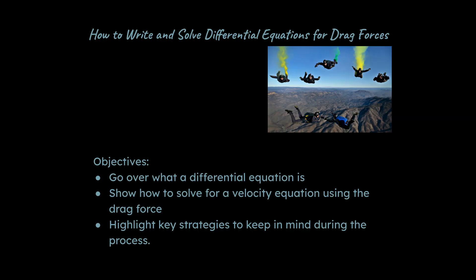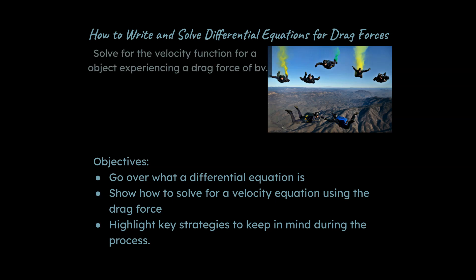A type of problem you would see on an FRQ for AP Physics C mechanics would be to solve for the velocity function for an object experiencing a drag force of BV, KV, negative BV, or negative KV. I'll talk you through what that means in just a minute.